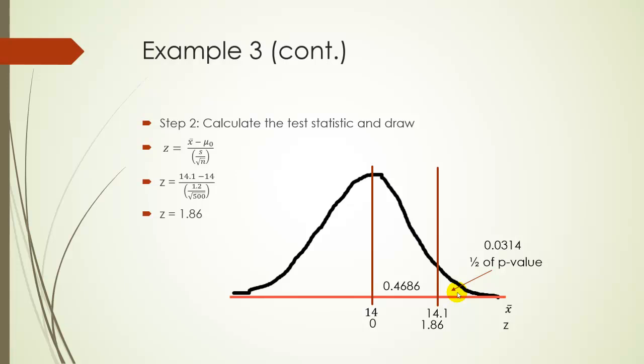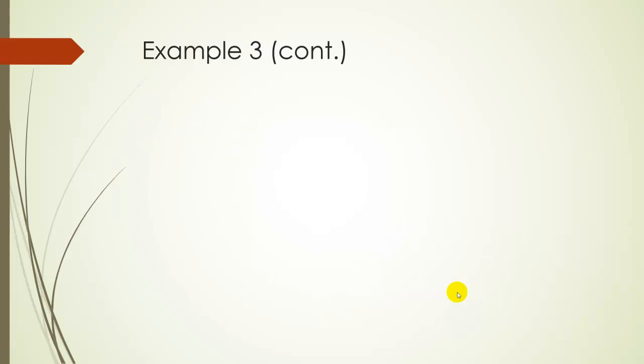So when we want to make our conclusion, remember our alpha value is 1%. Our p-value is actually 0.0628, double the number we found, because it's a two-tailed test. And remember, if you use software, it's automatically going to do that for you. So our alpha value is 1%. Our p-value is a little over 6%. So our alpha value, which is our threshold, is less than our p-value, our observed value. So therefore, we're going to fail to reject HO.